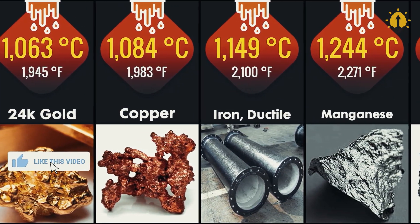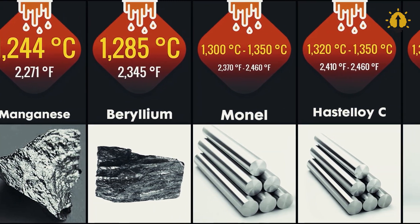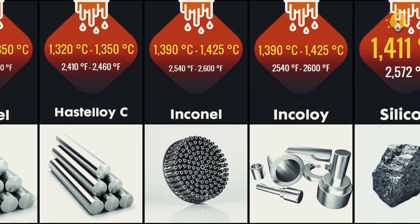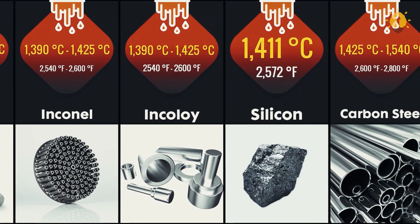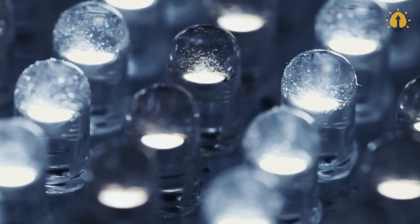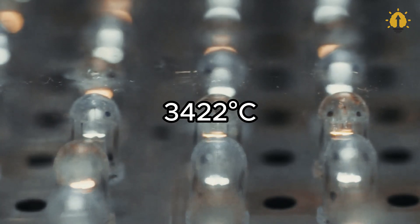Gold, on the other hand, melts at a scorching 1064 degrees Celsius, while iron needs to reach a blistering 1538 degrees Celsius before it turns into a molten state. And if we talk about tungsten, which holds the record for the highest known melting point, it takes an astonishing 3422 degrees Celsius to make it melt.